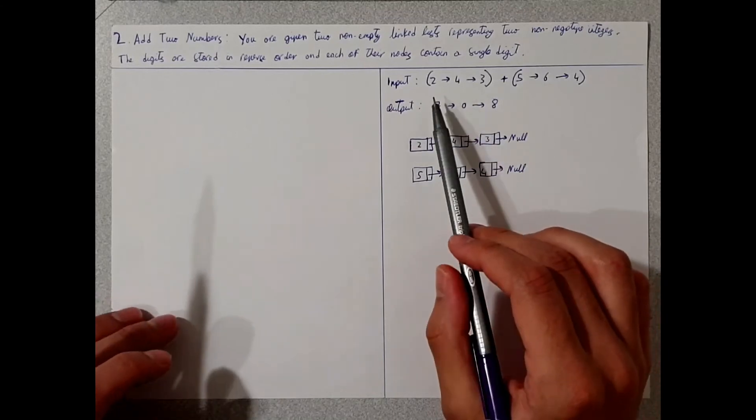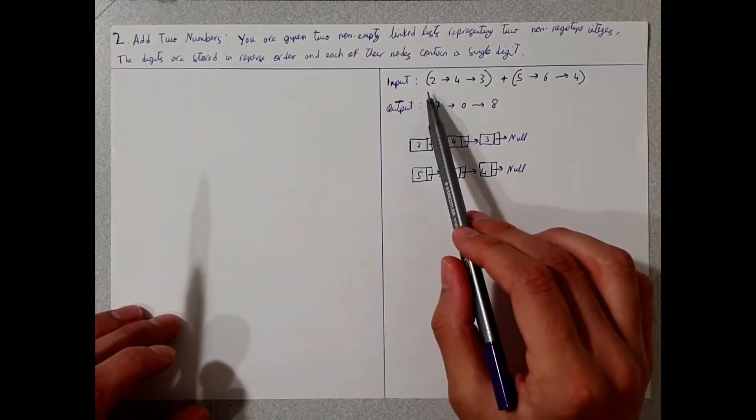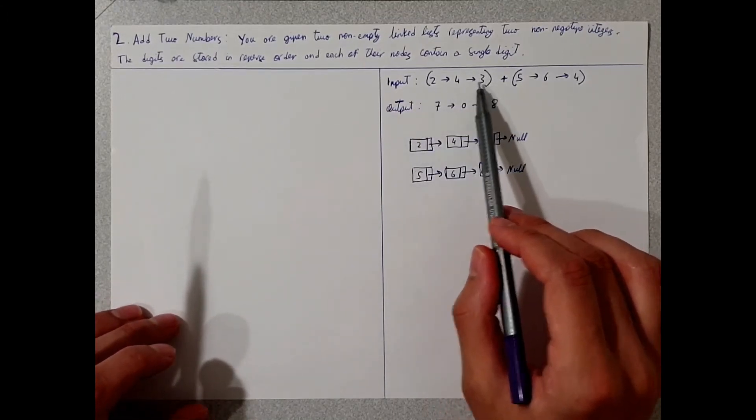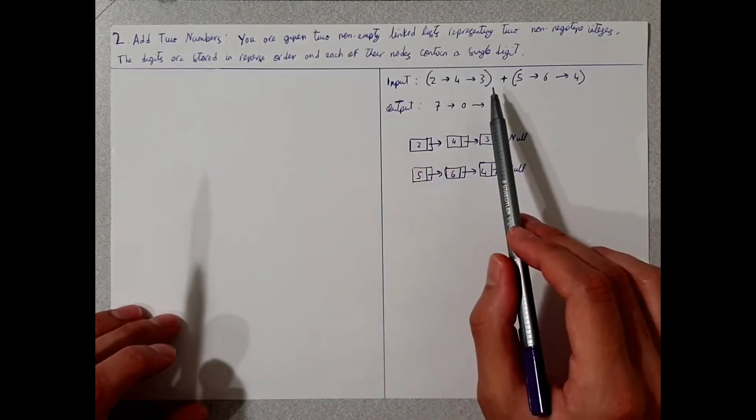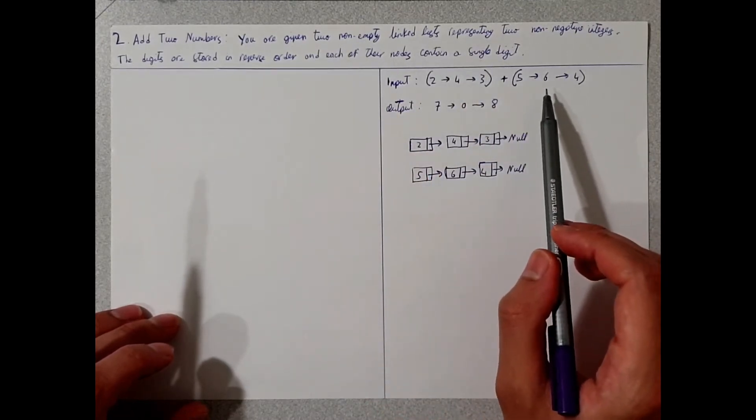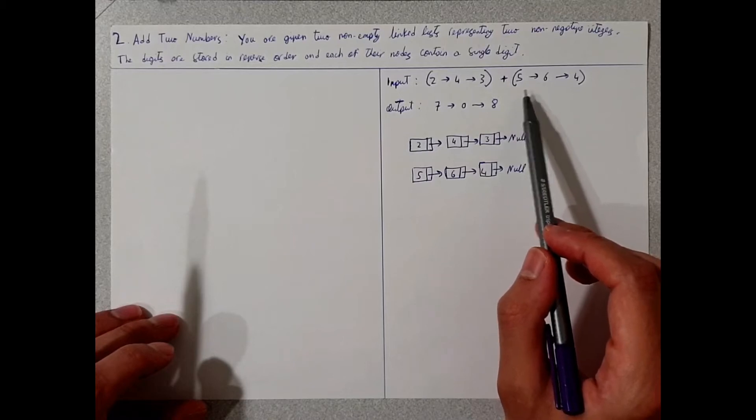So here we see an example. We have the input with 243, which is our first non-empty linked list, and we have a second non-empty linked list, 564.